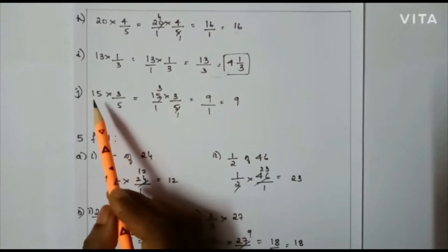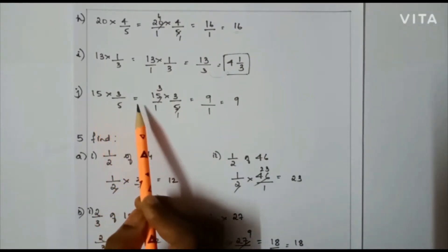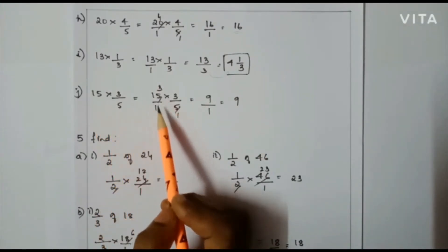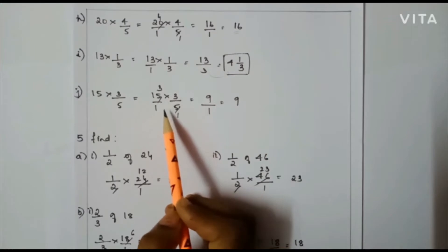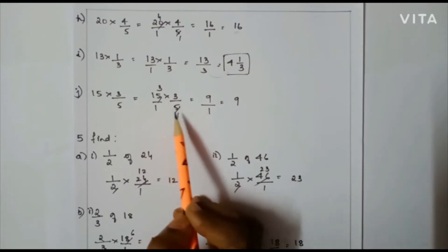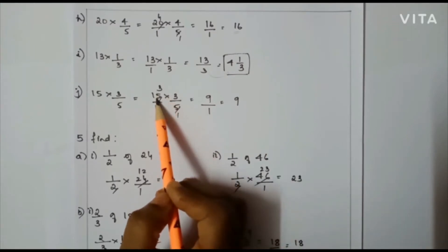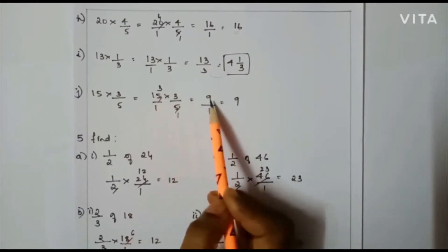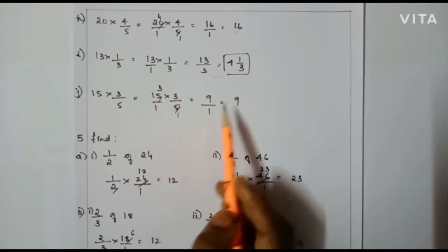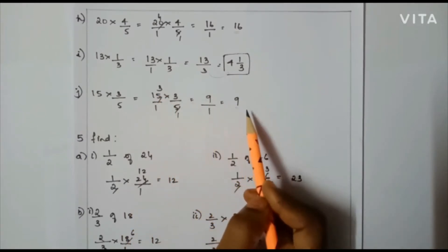Next: 15 × 3/5, that is 15/1 × 3/5. Here I can cancel: 5 divides 15 giving 1 and 3. Then 3 × 3 = 9, and 1 × 1 = 1. So my final answer is 9.